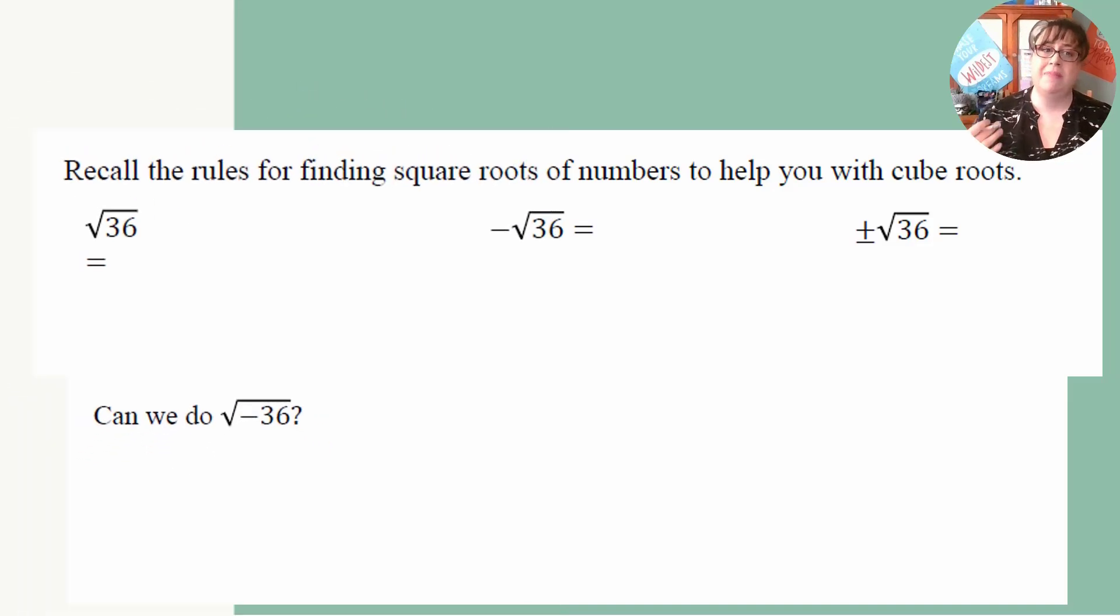We're going to begin this lesson by recalling the rules for finding square roots of numbers to help us with cube roots. So we're looking at three scenarios, the square root of 36, the opposite of the square root of 36, and then plus or minus the square root of 36. So let's begin with the square root of 36. When we have this, we want to take 36 and break it into the prime factors or into at least twins. So we know that 36 is 6 times 6.